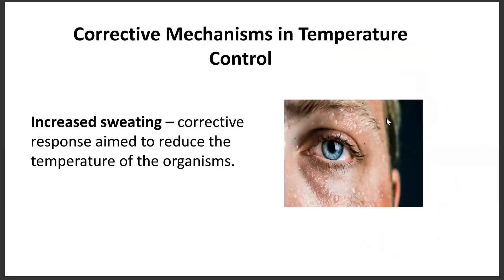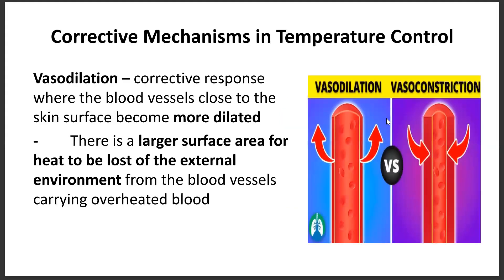These are the corrective mechanisms in temperature control. We have increased sweating — a corrective response aimed to reduce the temperature of the organism. During a very hot day, we tend to sweat a lot because our body is adjusting to the surrounding temperature. Next, we have vasodilation, a corrective response where blood vessels close to the skin surface become more dilated, providing a larger surface area for heat loss from overheated blood, helping cool the body down for homeostasis.